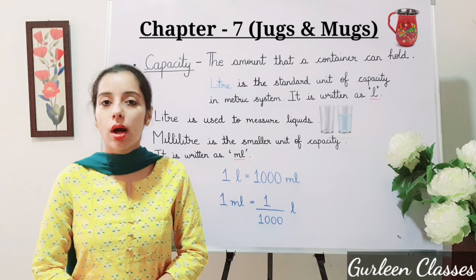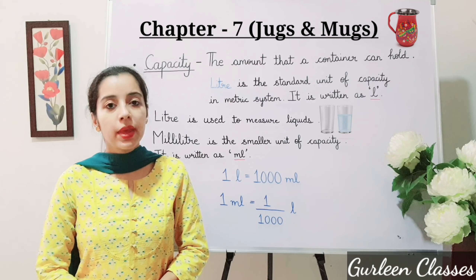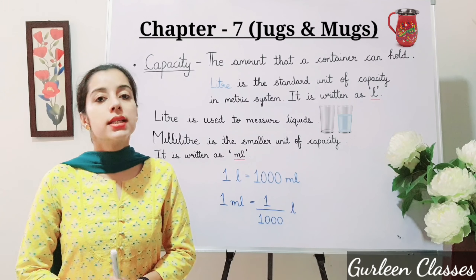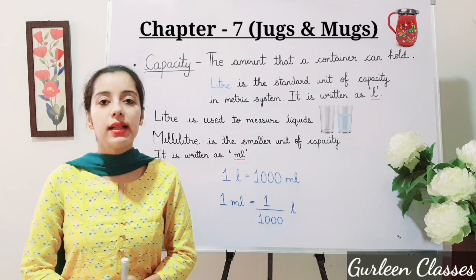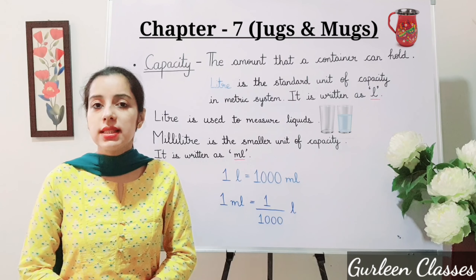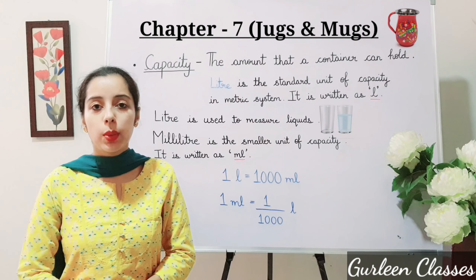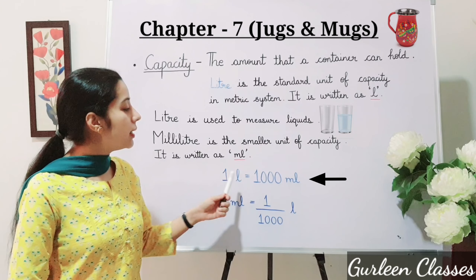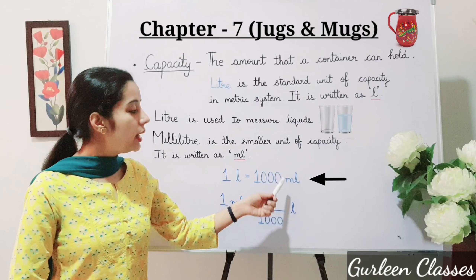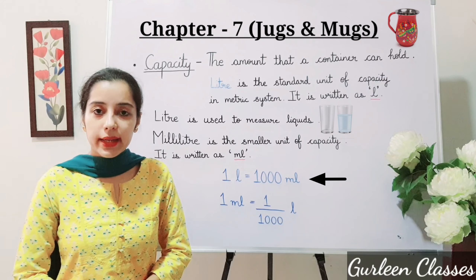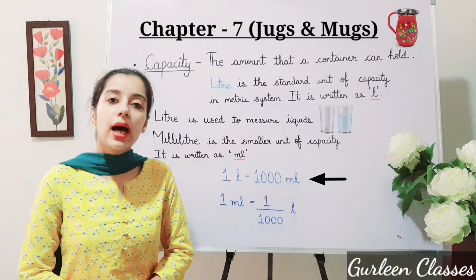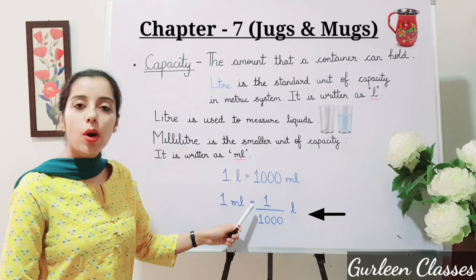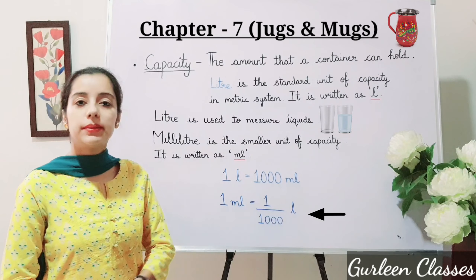Milliliter is a smaller unit of capacity and it is written as small 'ml' — small 'm' and capital 'L'. There is one relationship between liter and milliliter: one liter is equal to one thousand milliliter, and one milliliter is equal to one upon one thousand liter.